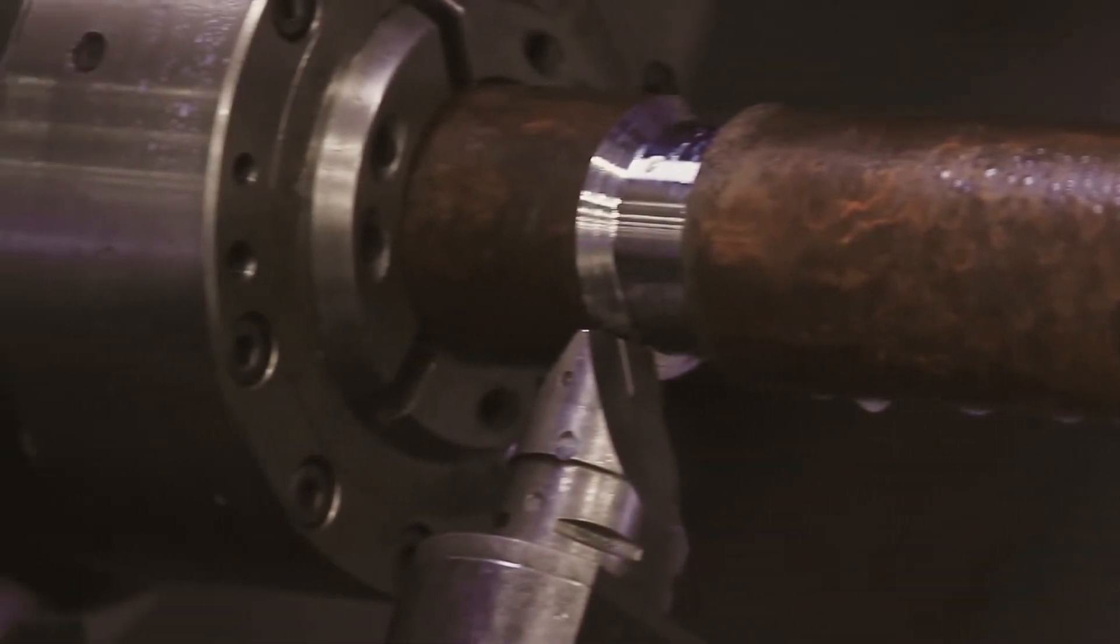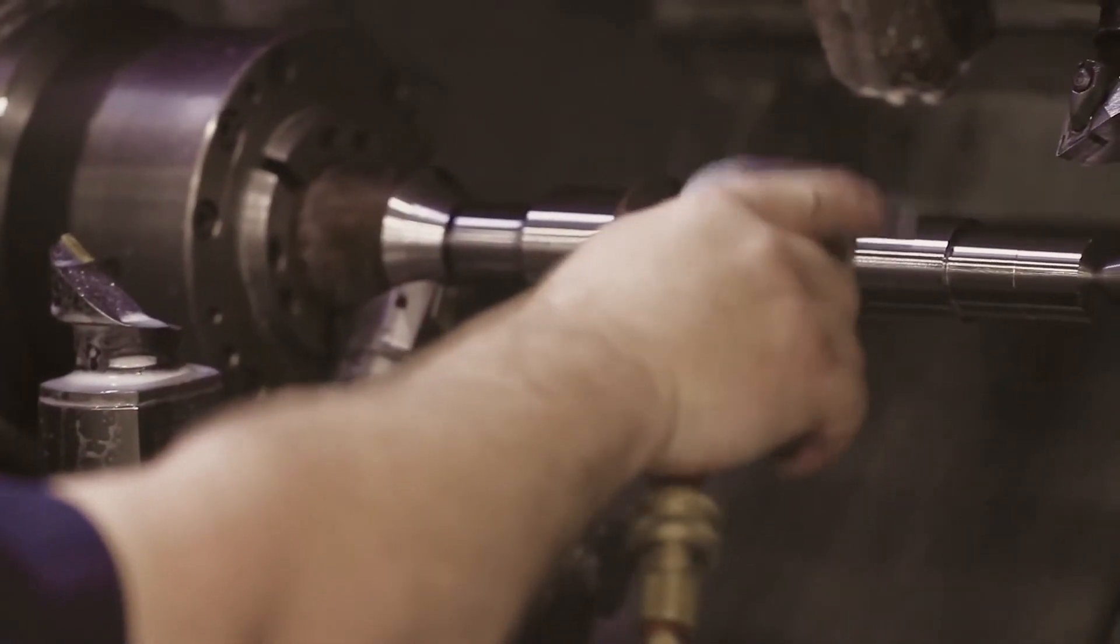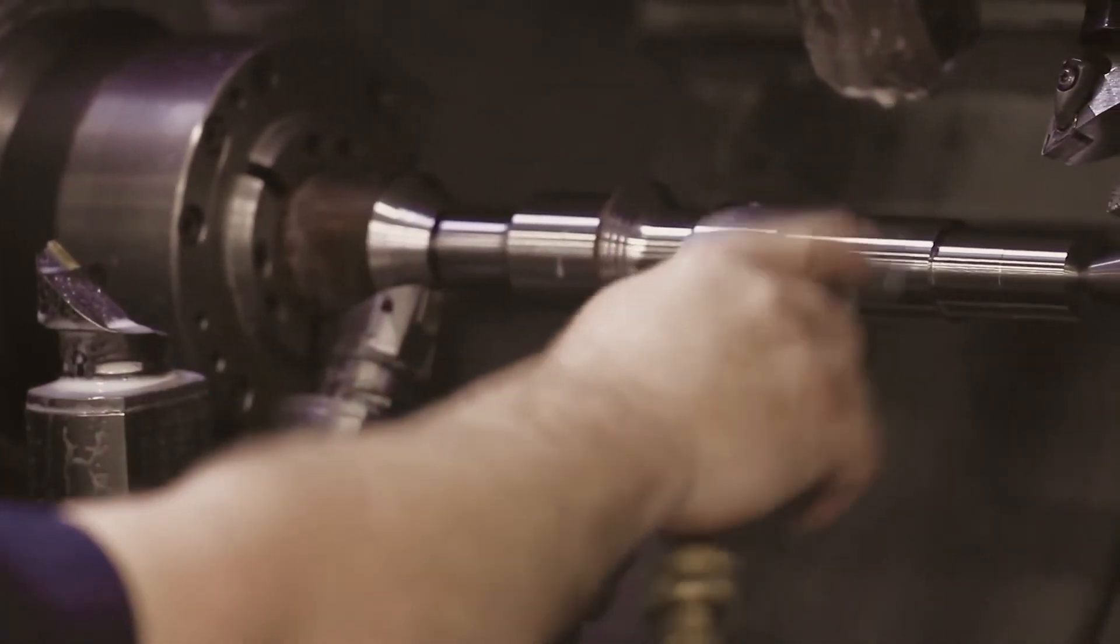For the most part, a lot of the stuff that we do is done in a single machine. It comes out complete—you have two clampings within a single machine and you have a finished part that comes out. Naturally, when you have fewer clampings, fewer material handling, and fewer chances for operator error, you're going to make a better part.